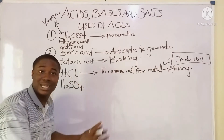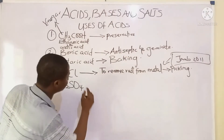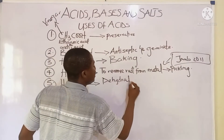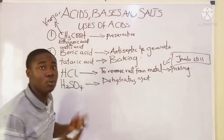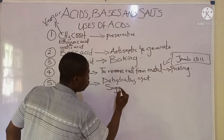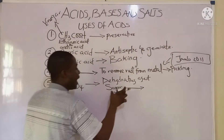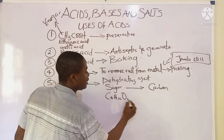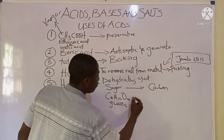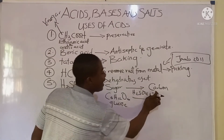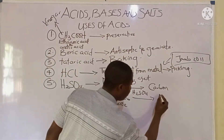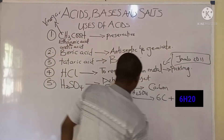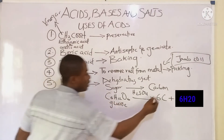Moving on to H₂SO₄ — called tetraoxosulphate(VI) acid. This acid serves as a dehydrating agent. For example, when we have a sugar like glucose (C₆H₁₂O₆) and we add H₂SO₄, it will dehydrate the glucose to form 6 moles of carbon plus 6 moles of water. So H₂SO₄ can dehydrate sugar to form carbon.